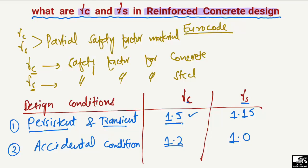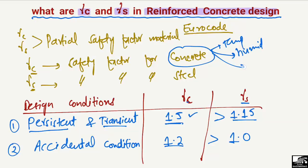We can observe that the concrete values are greater — 1.5 is greater than 1.15, and 1.2 is greater than 1.0. This is because concrete is manufactured on site most of the time, where we have temperature changes, humidity changes, and segregation phenomena, all of which can affect concrete strength. That's why we take a higher partial safety factor for concrete.